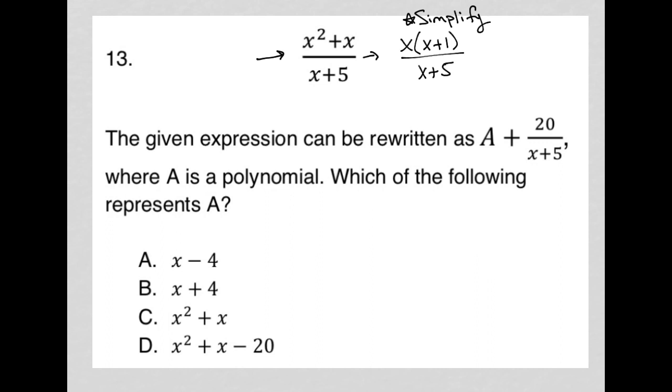We'll see if I'm right about that. The question goes on to say the given expression can be rewritten as A plus 20 over x plus 5, where A is a polynomial. Which of the following represents A?